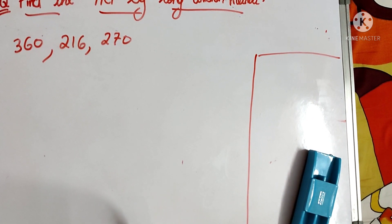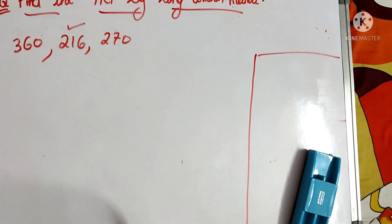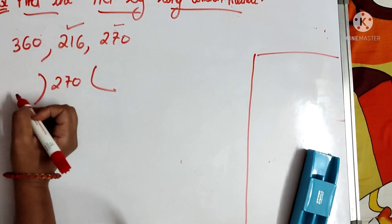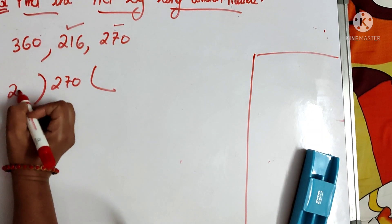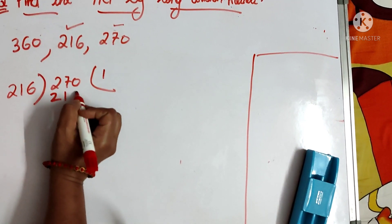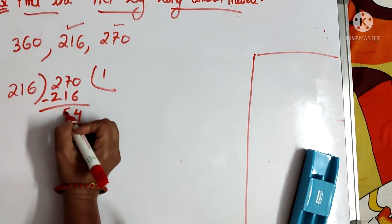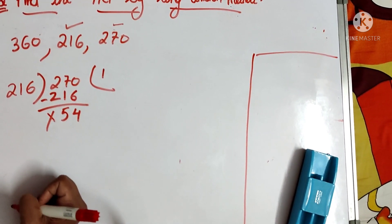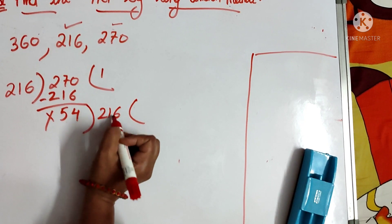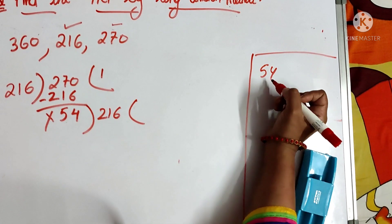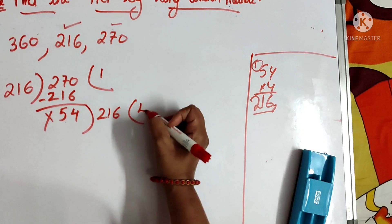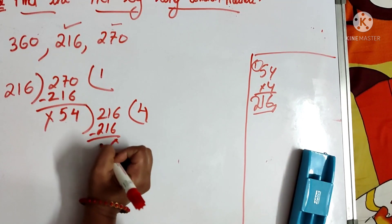Out of these three numbers, the smallest number is 216 and the next greater number is 270. So we divide 270 by 216. 270 minus 216 gives remainder 54. Now 54 becomes the divisor and 216 becomes the dividend. 54 into 4 is 216 exactly — it gets completely divided. So the HCF of 216 and 270 is 54.